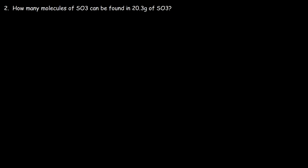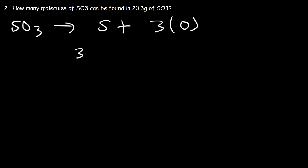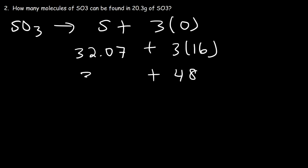Number 2: how many molecules of SO3 can be found in 20.3 grams of SO3? Feel free to pause the video if you want to try this. First, let's find the molar mass of SO3. We have one sulfur atom and three oxygen atoms. Sulfur has an atomic mass of 32.07 and oxygen is 16. Three times 16 is 48, and 32 plus 48 is 80, so the molar mass is 80.07.